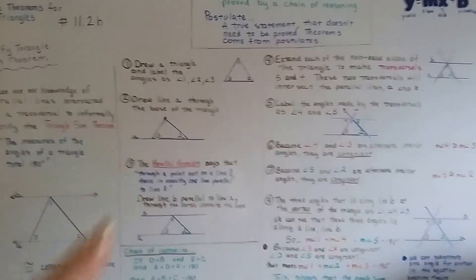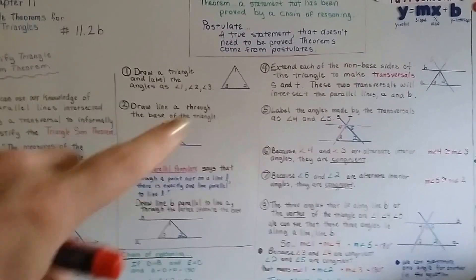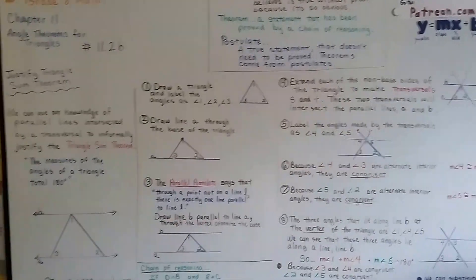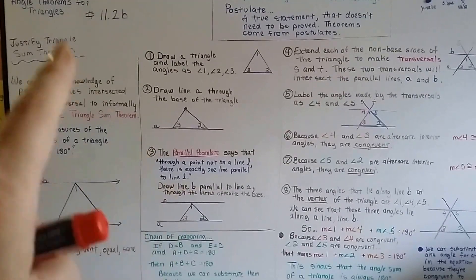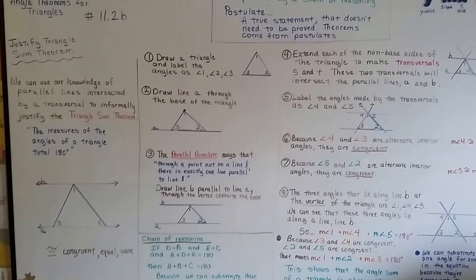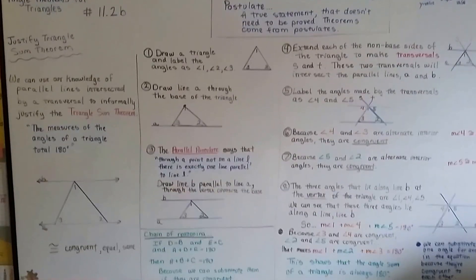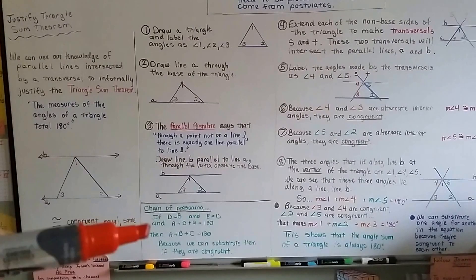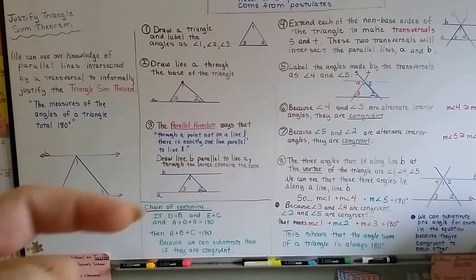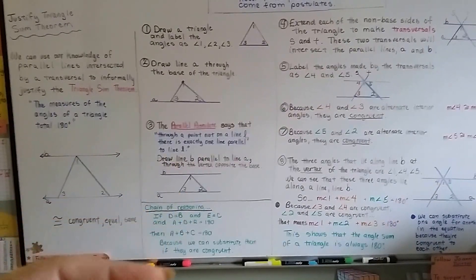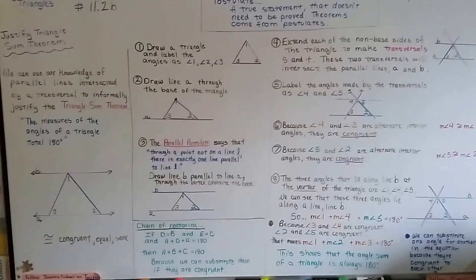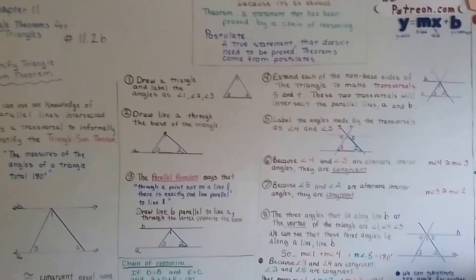We can substitute one angle for another in the equation because they're congruent. Angles 4 and 3 are congruent, and angles 5 and 2 are congruent because of the alternate interior angle rule. So we can say angles 1, 2, and 3 total 180 degrees — we justified the triangle sum theorem using the parallel postulate and the alternate interior angles rule. That's doing a chain of reasoning — that's justifying something, that's doing a proof.